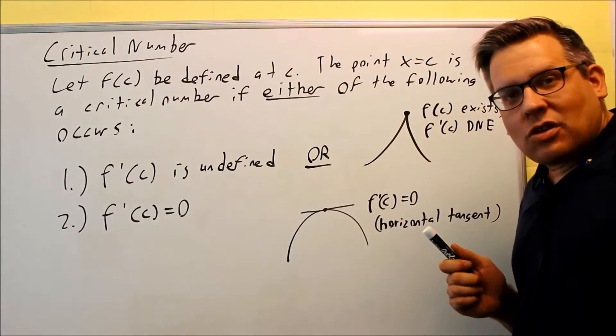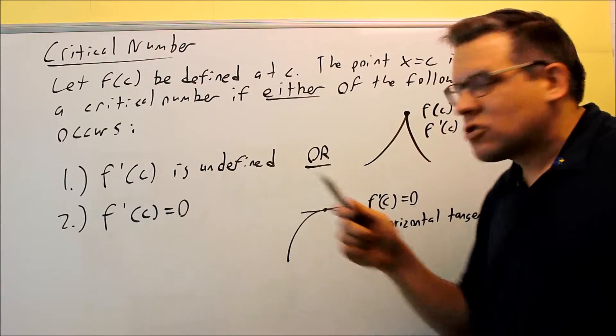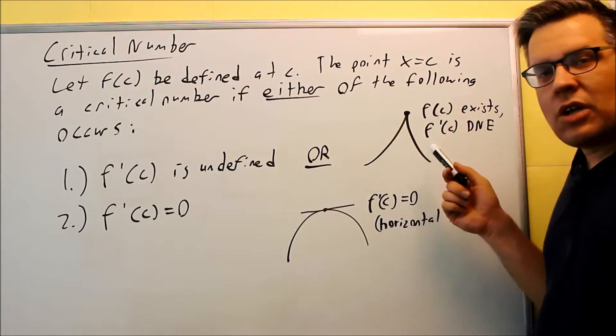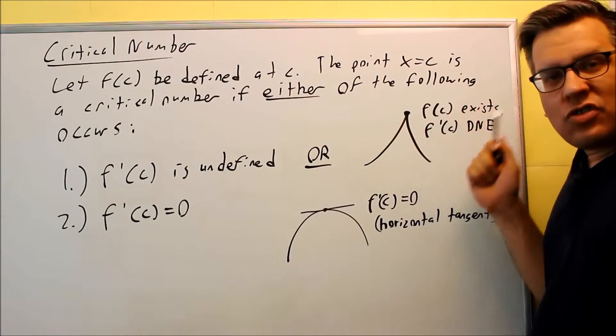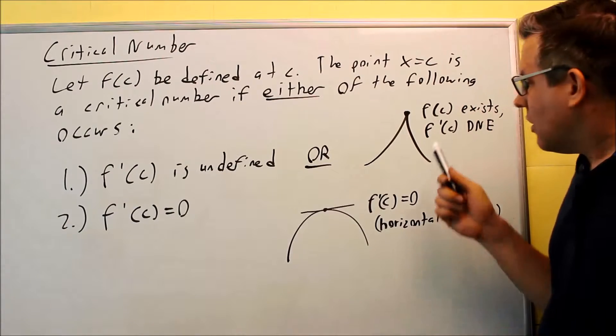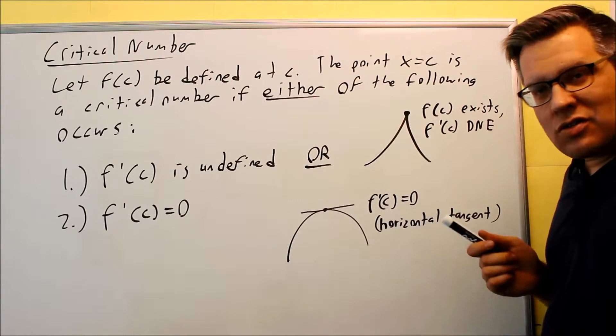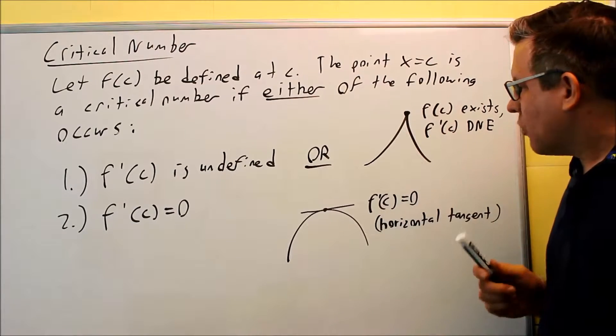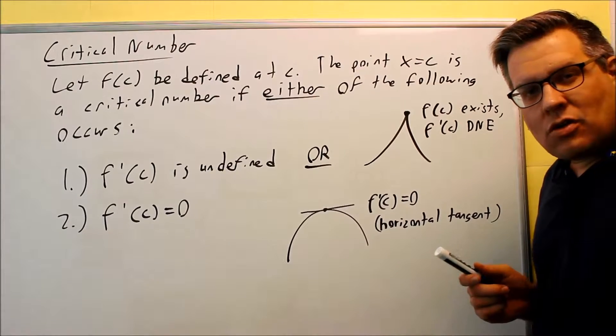Now, the other situation that's going to occur is if you take the first derivative and it's undefined. Here's a picture of something that happens where F of C is defined, but the derivative does not exist. If you have a cusp or a sharp point in the graph, that's a place where the derivative does not exist.